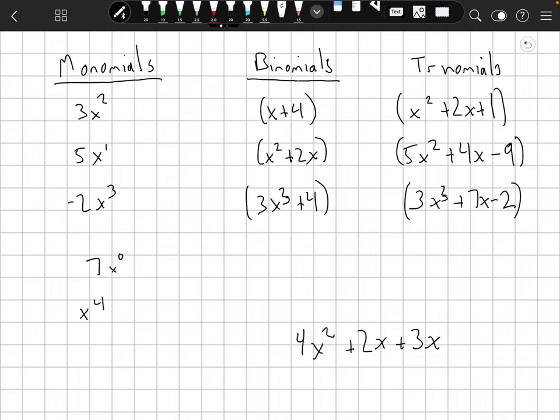Let's take a look at the next kind. We've got binomials. Here you might notice that we have two terms. So x to the fourth or x to the first plus 4x to the zero. Two terms there. x to the second plus 2x to the first and 3x cubed plus 4x to the zero. So these are called binomials.